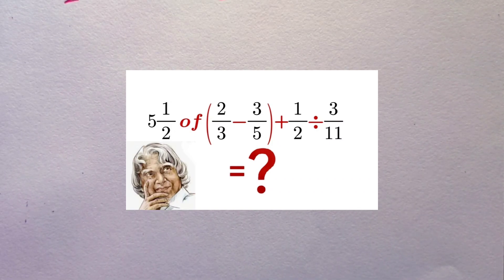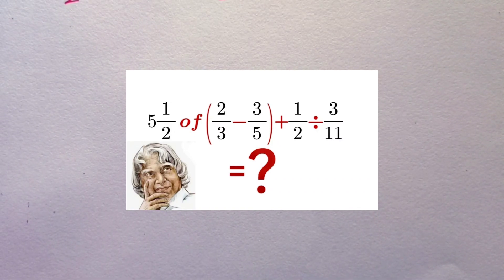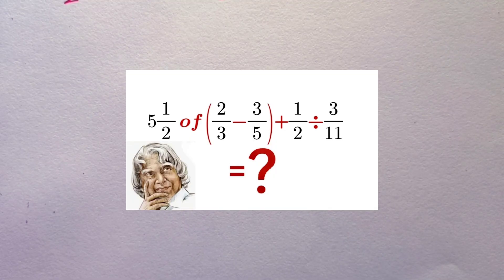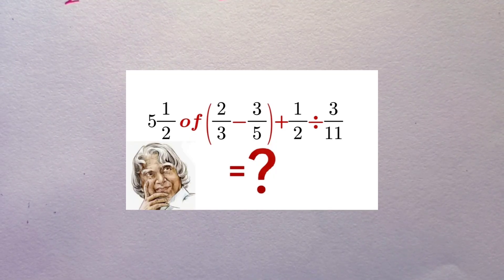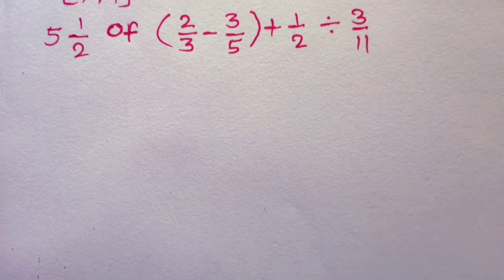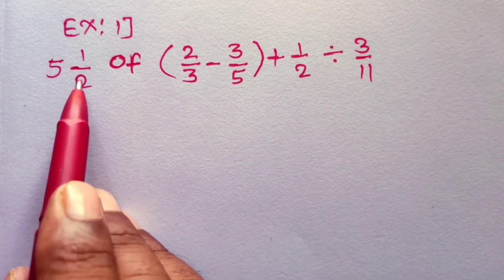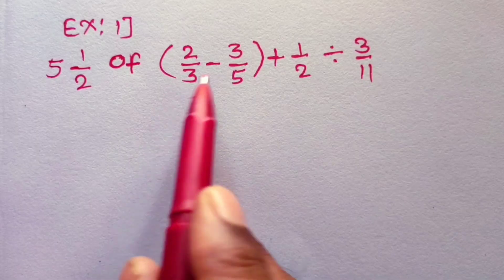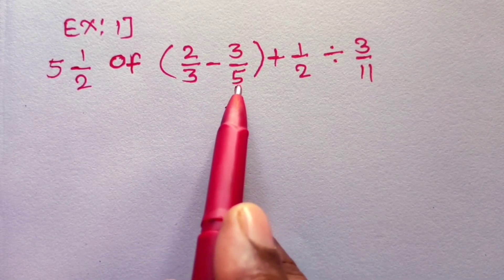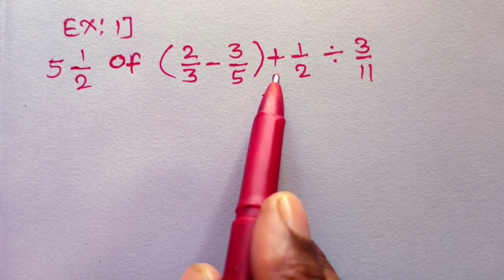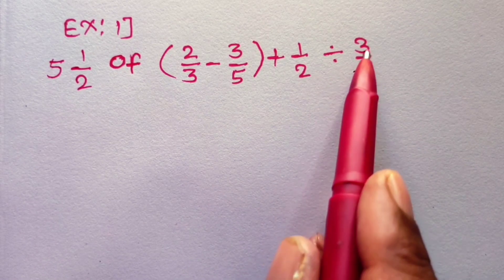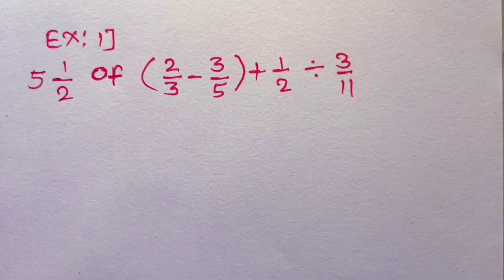Hello everyone, welcome to our step-by-step guide on solving the mathematical complex expression which involves division, subtraction and simplification of fractions. The mathematical expression is 5 and half of (2/3 - 3/5) plus half divided by 3/11.